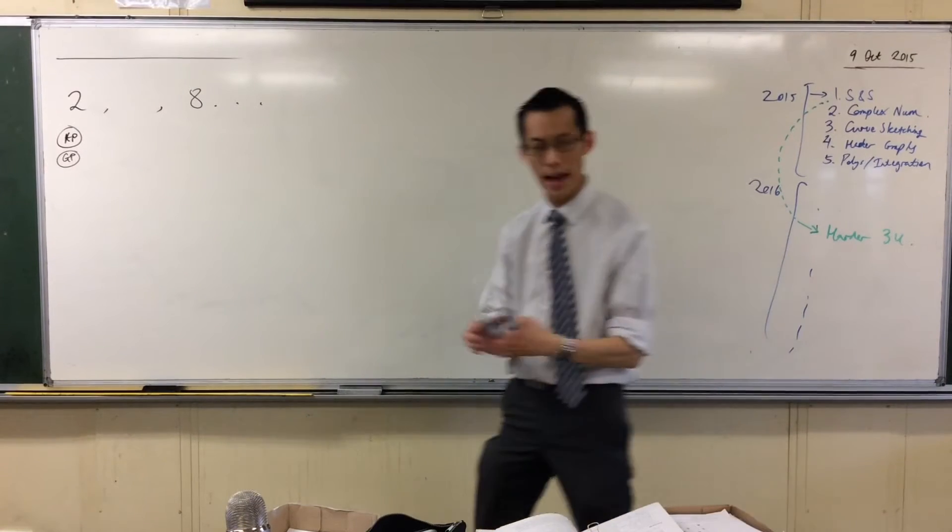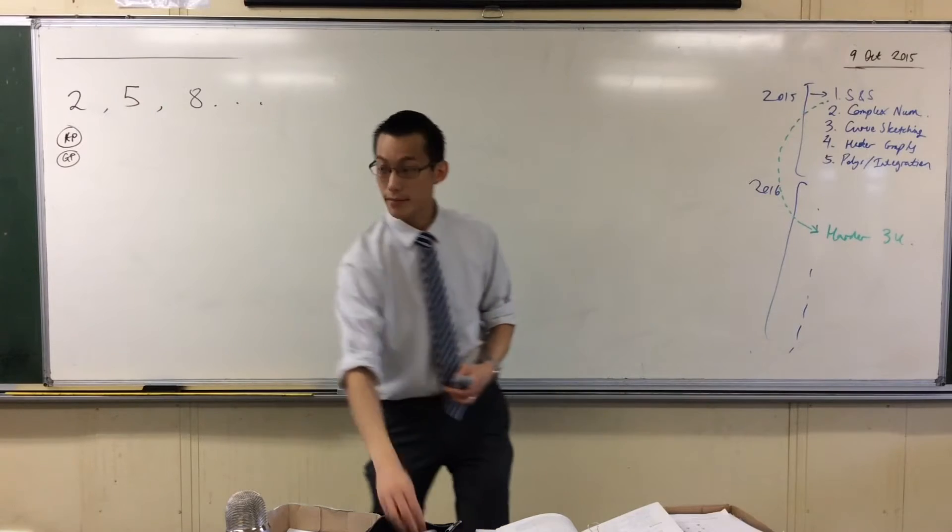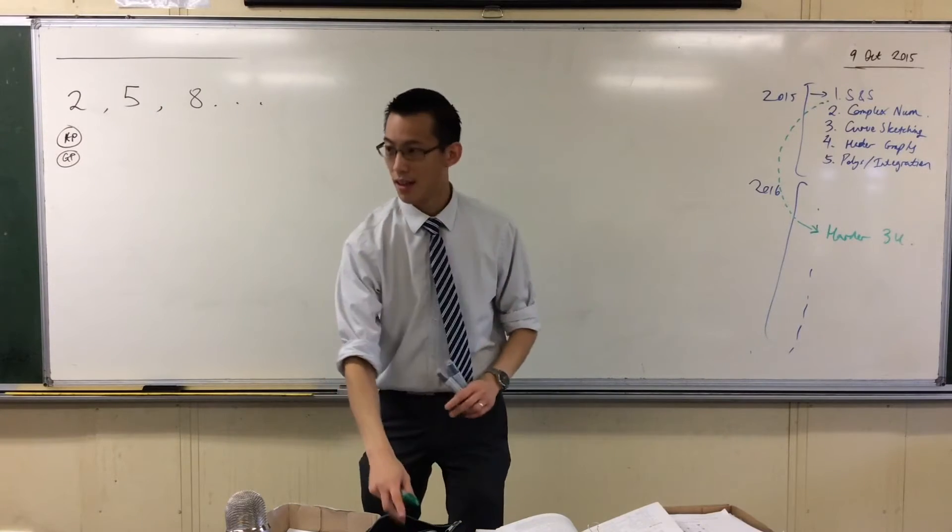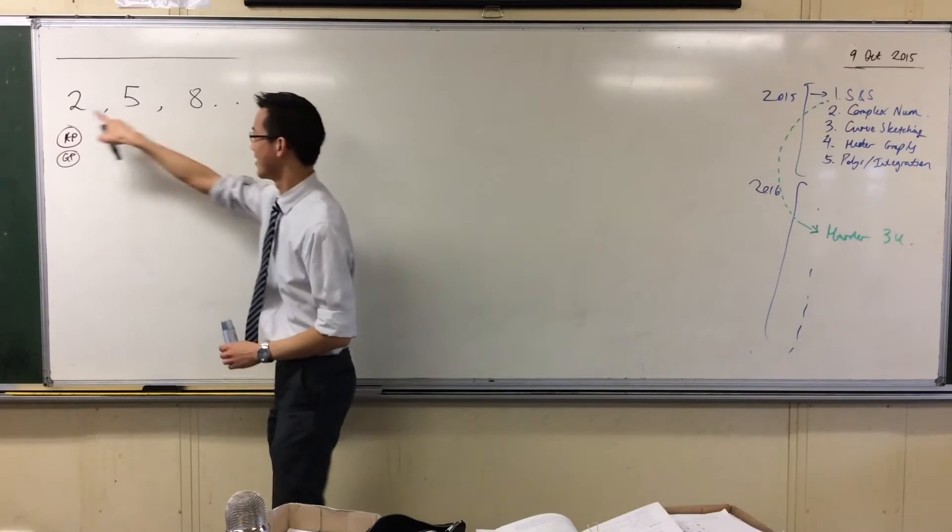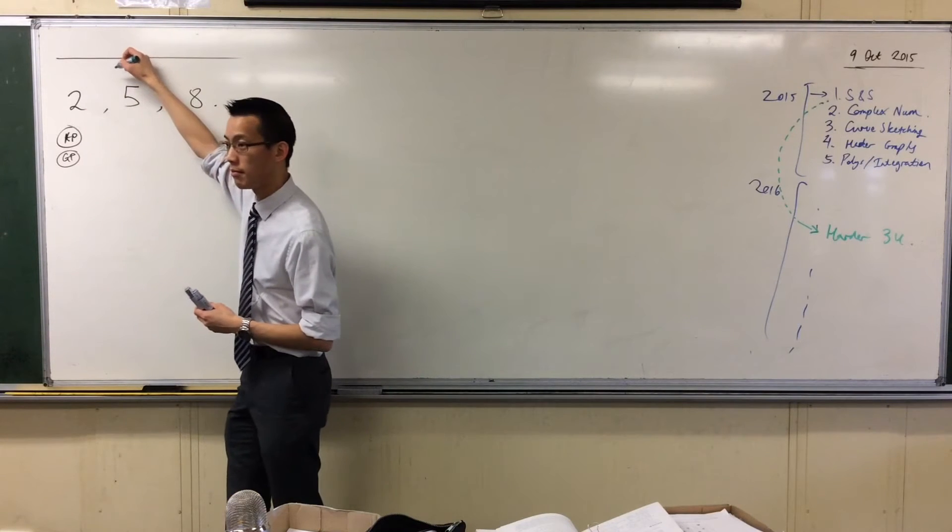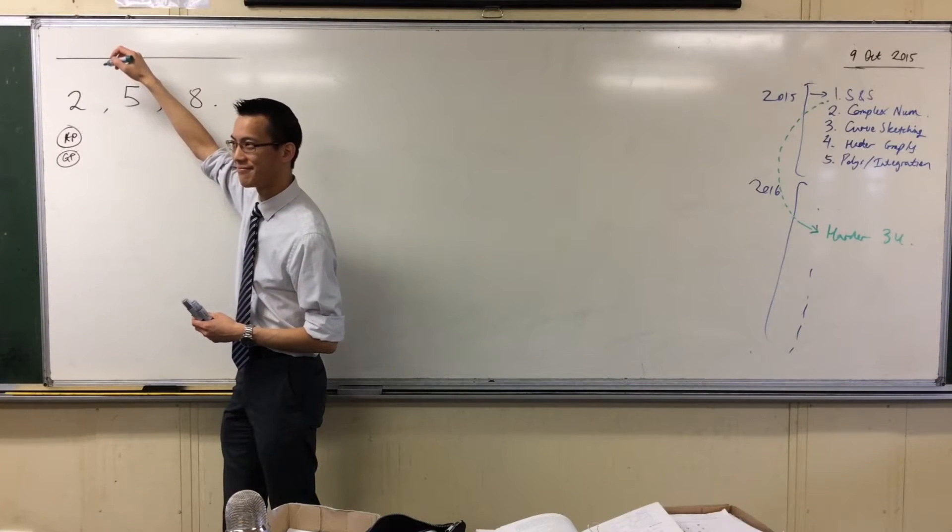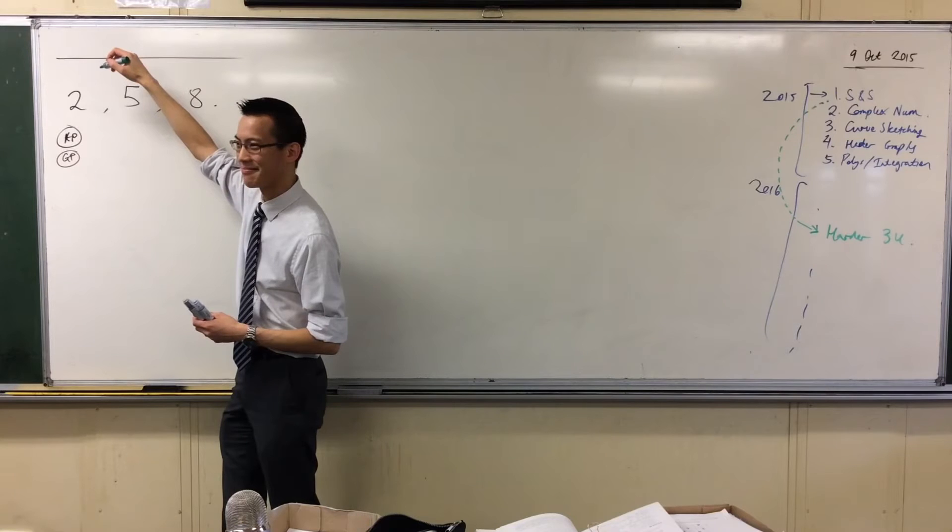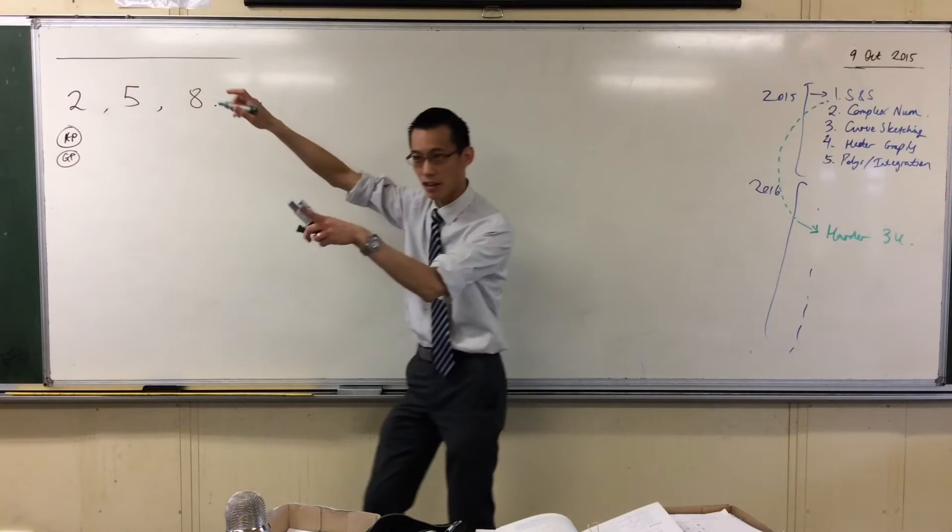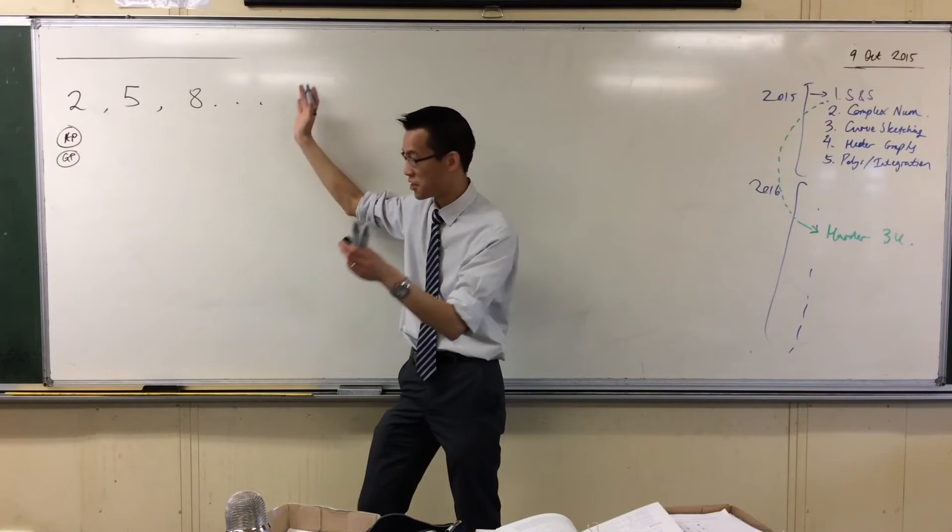What number would I put in here to make this an AP? I would put five. How did you get five? Because you take the third term, subtract the first term, and because you know there's a common difference between the first and second and third term, the common difference has to be twice if you jump from the first term to the third term.